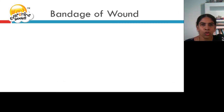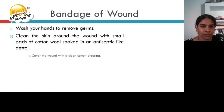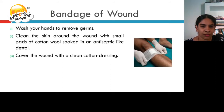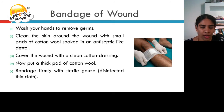Let us see how to bandage the wound. Wash your hands to remove germs. Clean the skin around the wound with small pieces of cotton wool soaked in an antiseptic. Cover the wound with a clean cotton dressing. Now put a thick pad of cotton wool and bandage firmly with sterile gauze, which is a disinfected thin cloth.